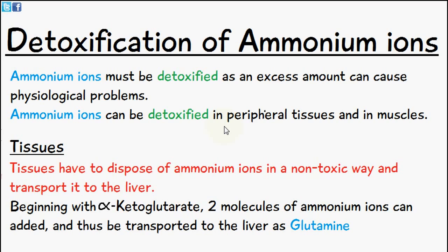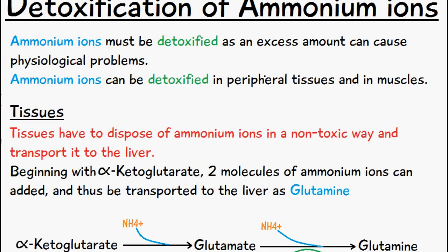Welcome to 5-Minute School. Today's video is focused on the detoxification of ammonium ions. In the previous video we looked at the sources of ammonium ions and their toxic effect. The body must respond to high amounts of ammonium ions in a variety of different ways, occurring in the tissues and in the muscles. The video following this will look at the urea cycle, which is specifically how ammonium ions are removed from the body.